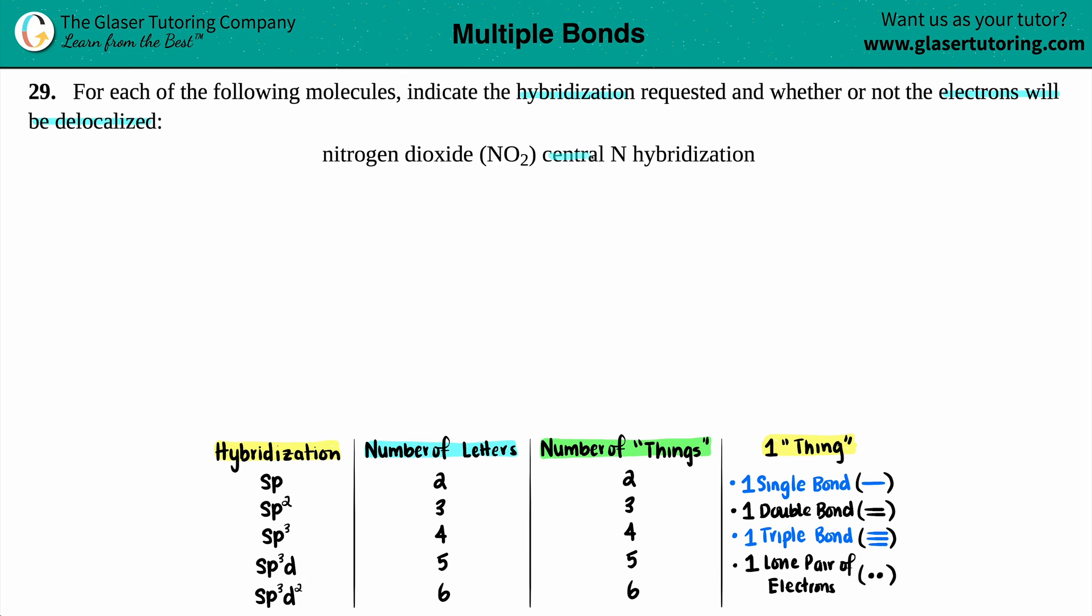Whenever we're trying to figure out a hybridization, the best thing to do is to always first draw a Lewis structure. Now I know it's one extra step, but just visualizing what this molecule actually looks like will help you to find out the hybridization, so I'm going to do just that.